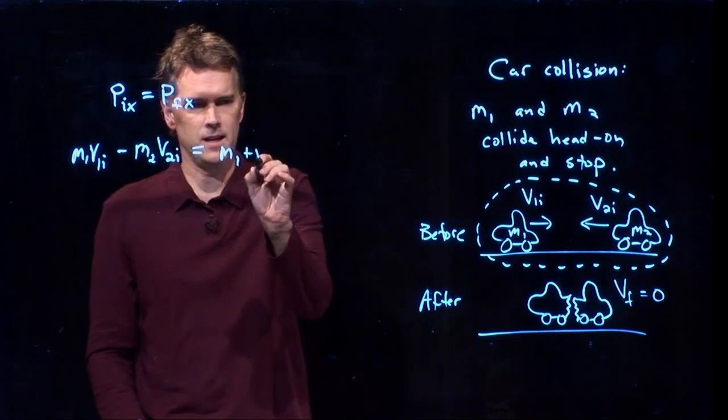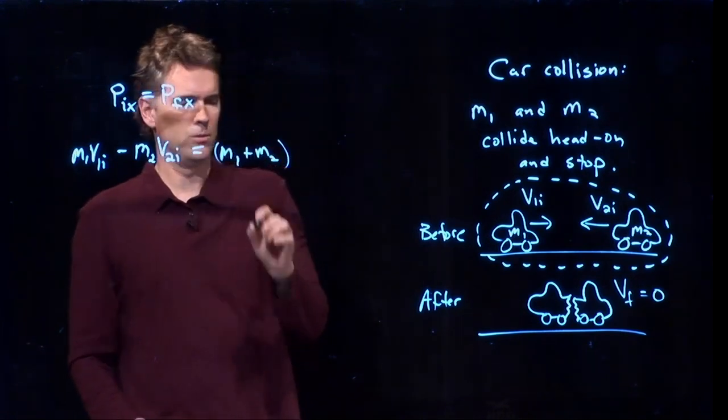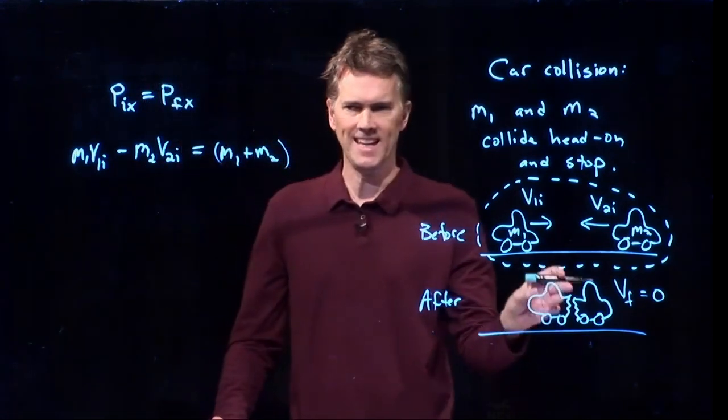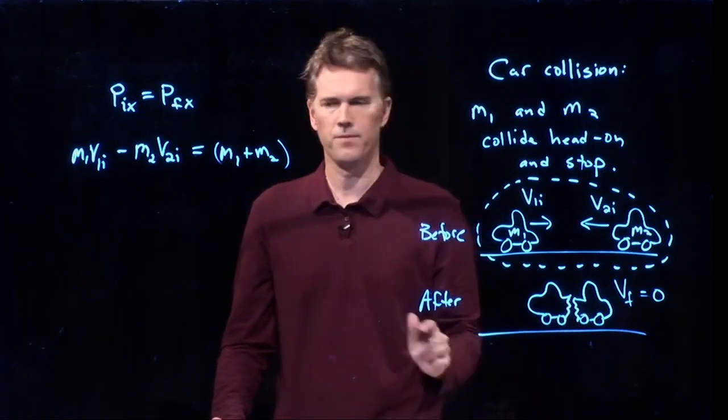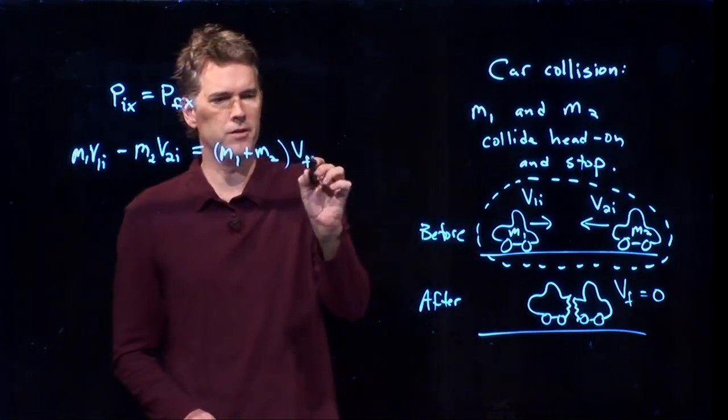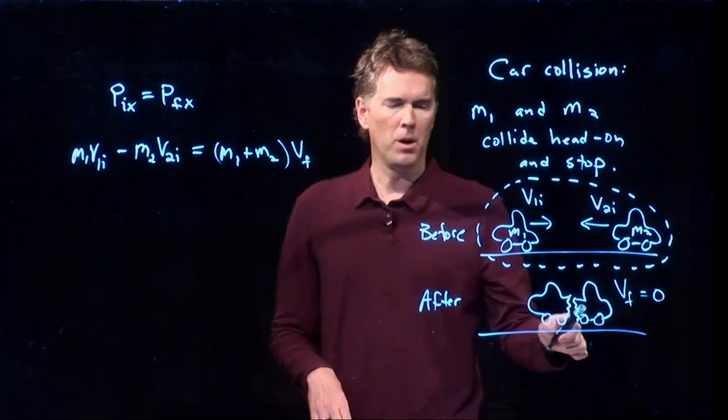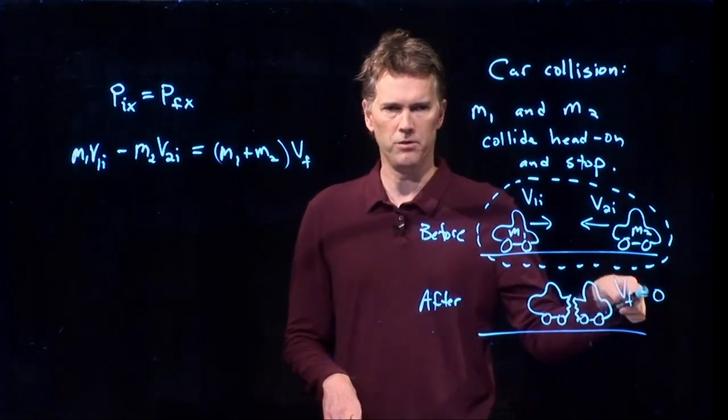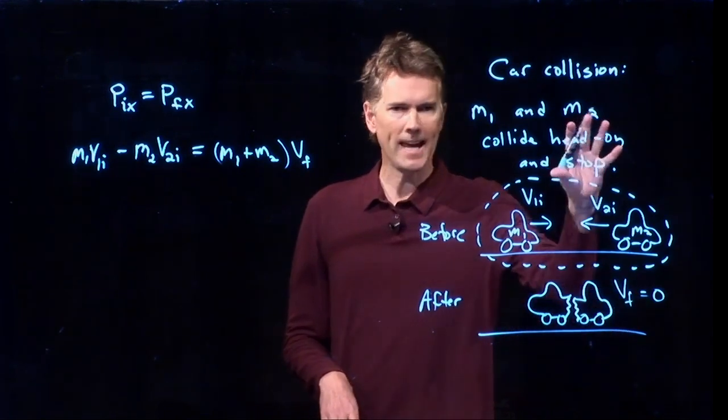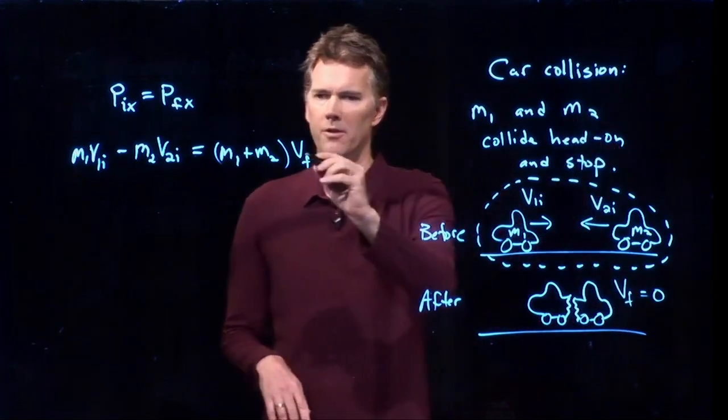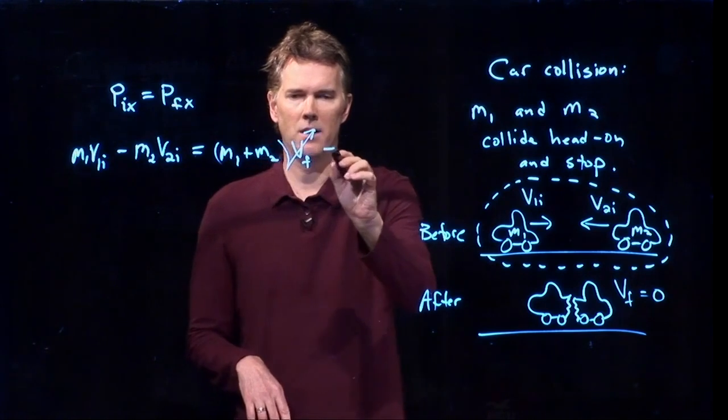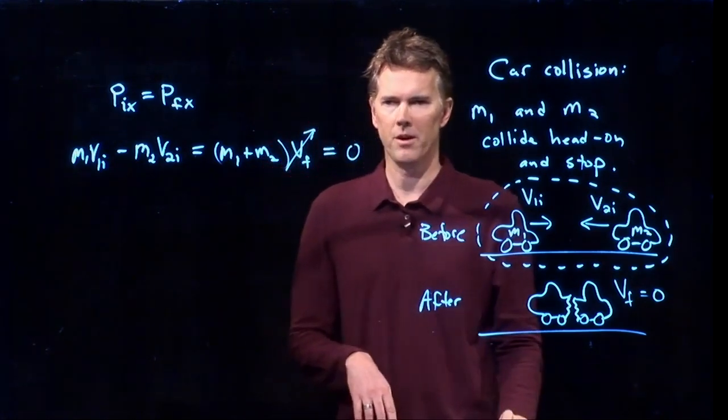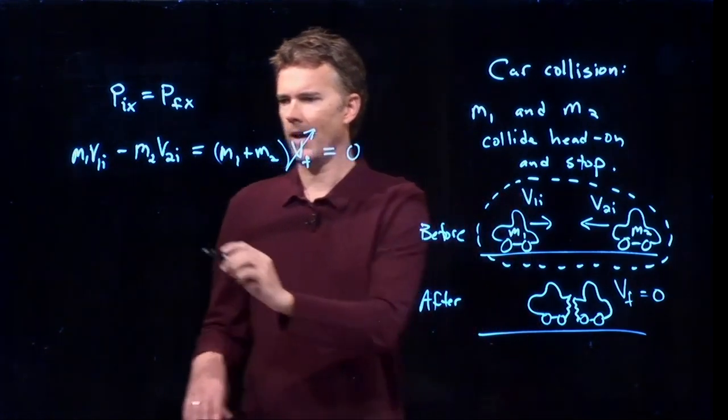And all of that is going to be equal to the two cars stuck together now, which happens in a perfectly inelastic collision, times v final. But our initial condition was v final has to be equal to 0. That's what we gave you in the problem. And so this is gone and that whole thing equals 0.